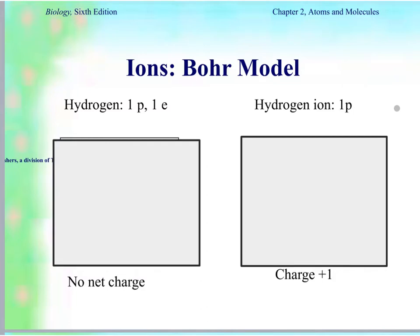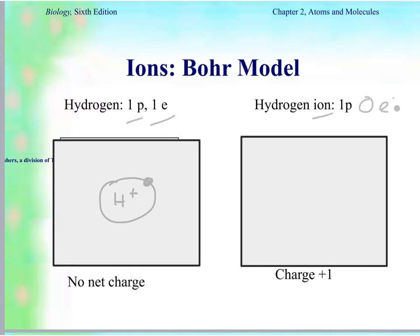We're going to draw the Bohr model of hydrogen with no net charge. For hydrogen, you have the nucleus with one proton, symbolized as a positive charge. Because hydrogen is in the first row of the periodic table, it has one orbital. With no net charge, protons equal electrons, so you have one electron on the orbital. If hydrogen is an ion and lost its electron, there are zero electrons and only a proton — you draw the orbital, but there will be no electrons on it, giving it a charge of plus one.